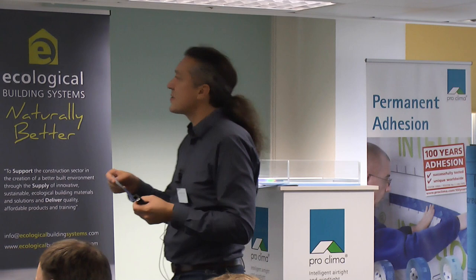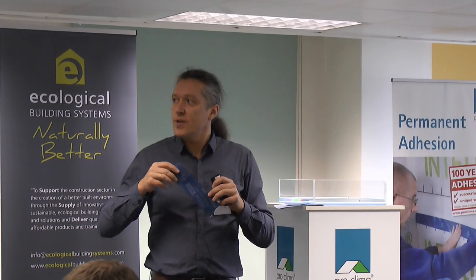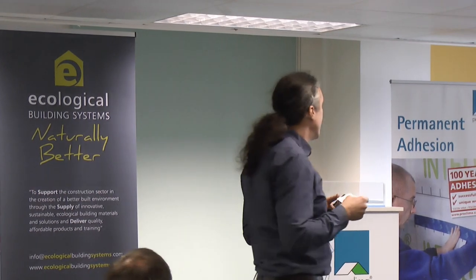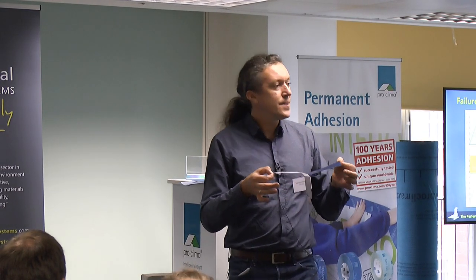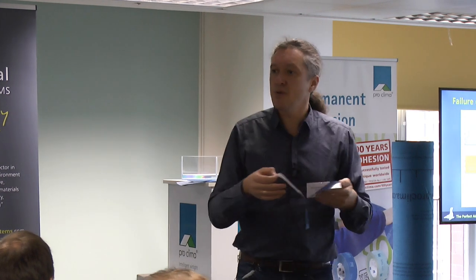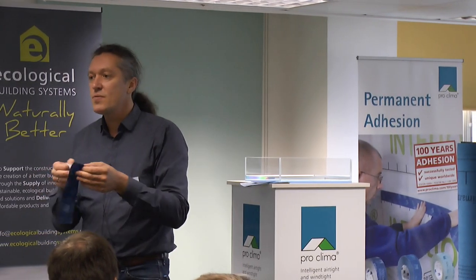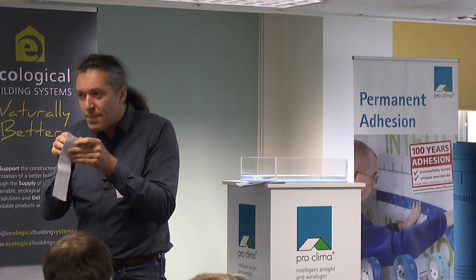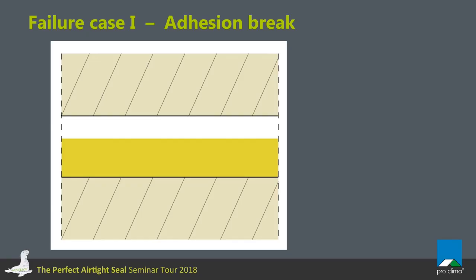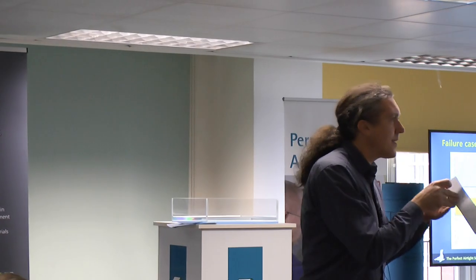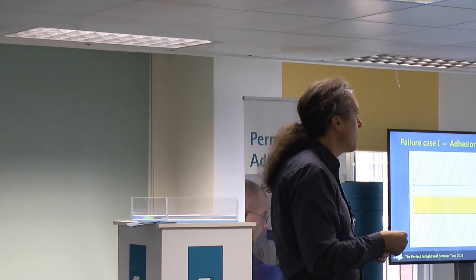Now you know which forces are working within this thin layer, but there are also failures. The first one is the adhesion break. The easiest way to describe it is removing the release paper — this is an adhesion break, which you apply every time you work with tapes. But you are not able to remove the backing; it's connected very well to the glue itself. Do we want an adhesion break on our bonding sides once we've glued it to our airtightness membrane? No. We want the tape to stay on our airtightness layer, because otherwise we would not have airtightness anymore.